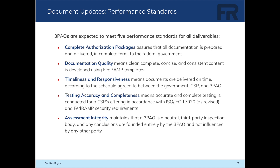Documentation quality means clear, complete, concise, and consistent content is developed using FedRAMP templates in accordance with FedRAMP's general document acceptance criteria. Timeliness and responsiveness means documents are delivered on time according to the schedule agreed to between the government, CSP, and 3PAO.